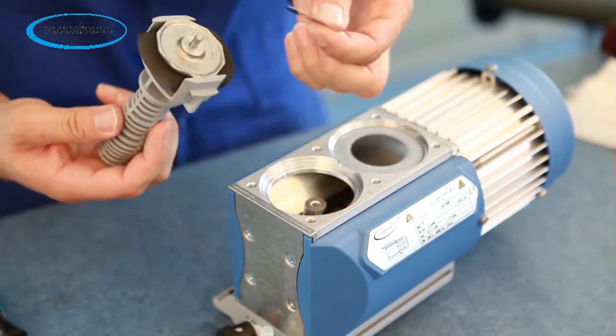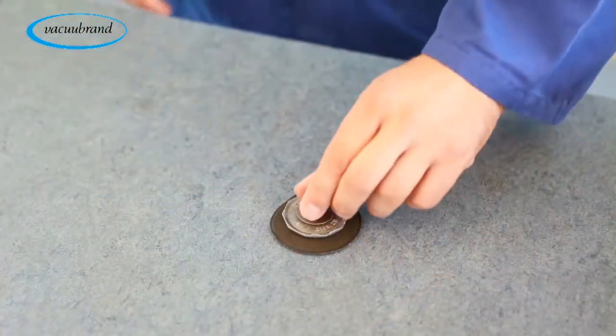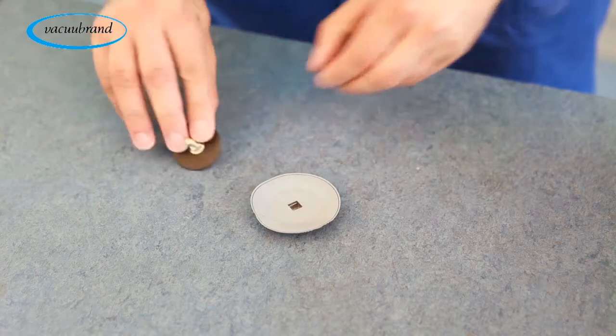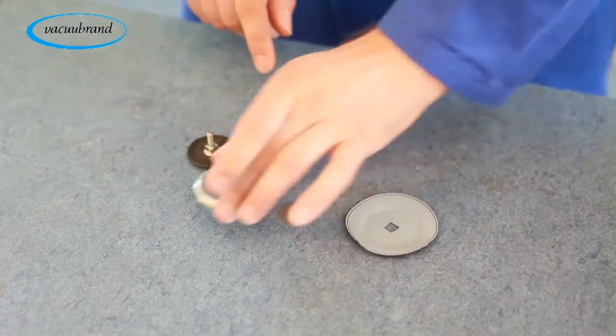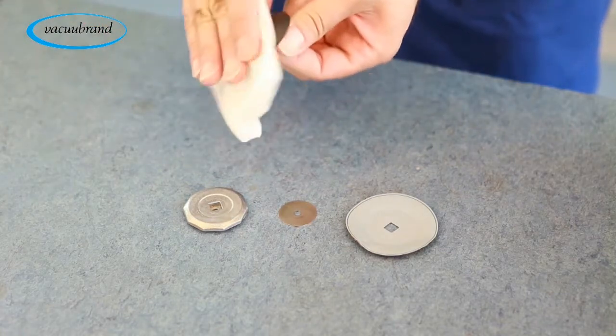Remove the support disc assembly washer from the connecting rod. Remove the diaphragm clamping disc from the diaphragm assembly and clean with the alcohol solution.